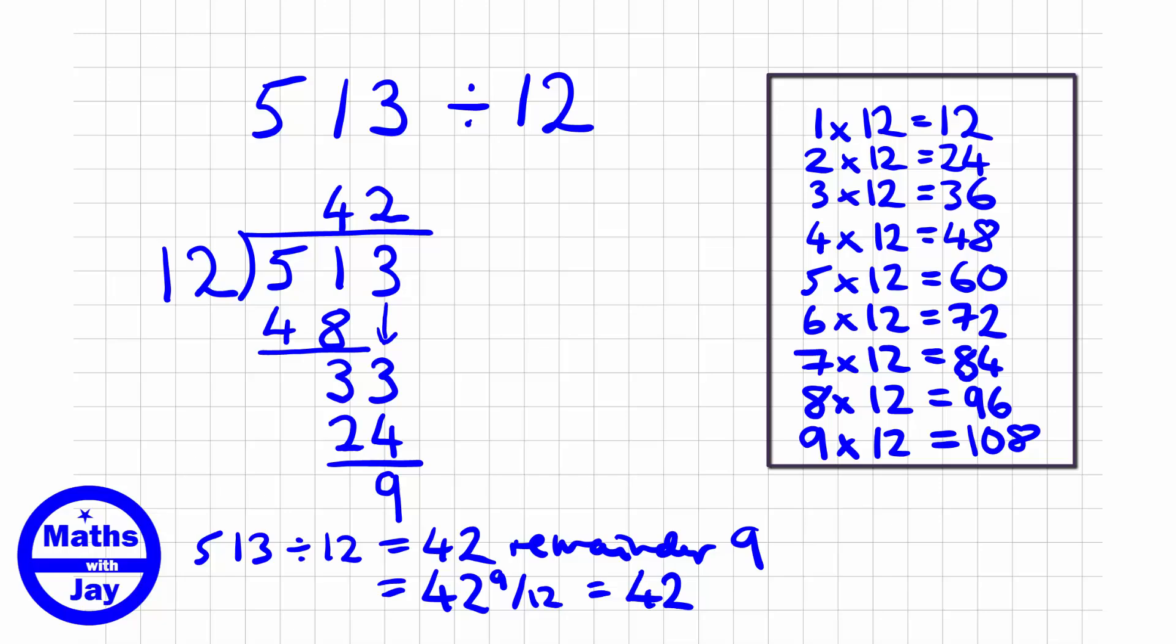And well, 9 twelfths cancels down to 3 quarters. So if we wanted the answer to have a fraction in it, we're done. And obviously I hope you know that 3 quarters is 0.75, so you could write that down as a decimal.